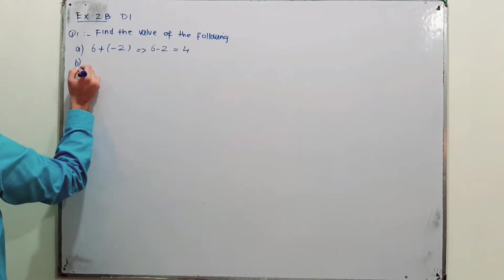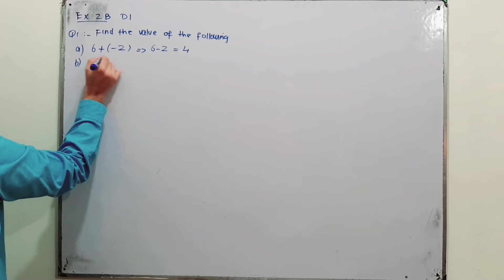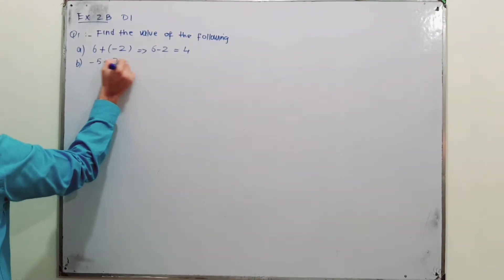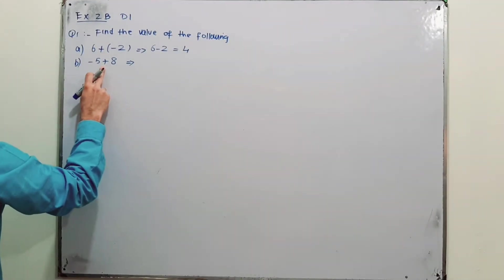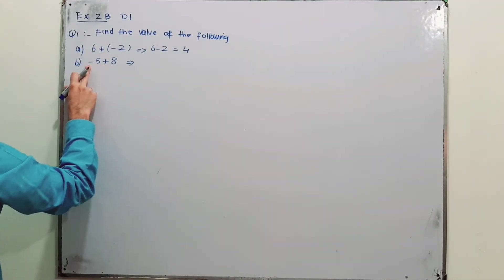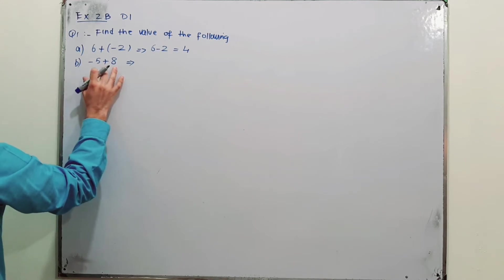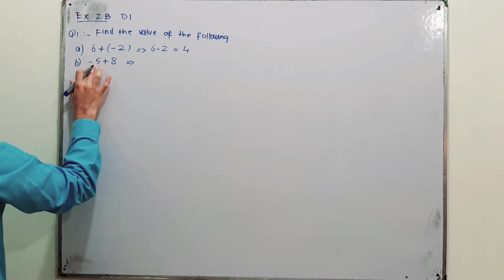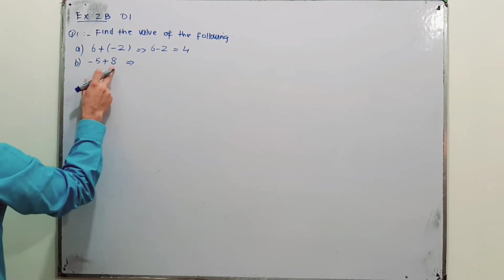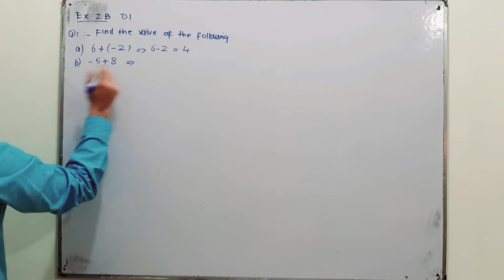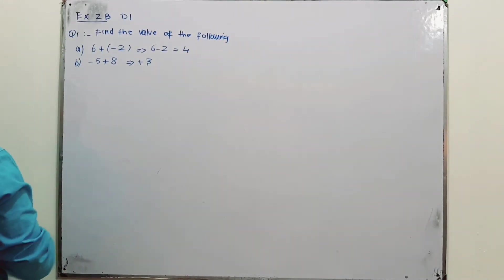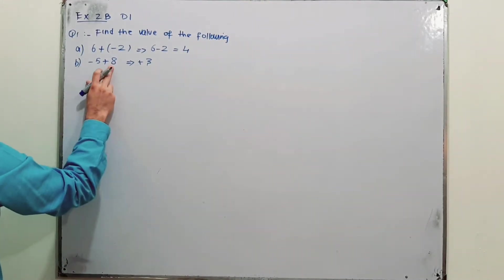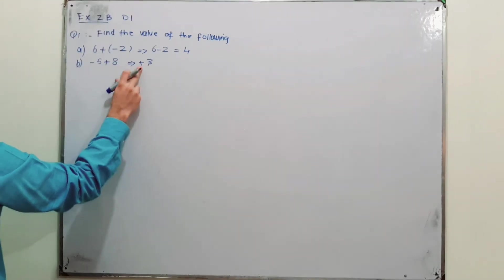Part B: minus 5 plus 8. Here 8 is positive and 5 is negative, so 8 and 5 will be subtracted: 8 minus 5 gives us plus 3. The bigger number, 8, is positive, so the answer is positive.